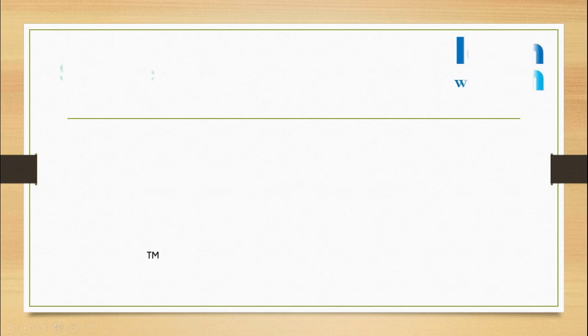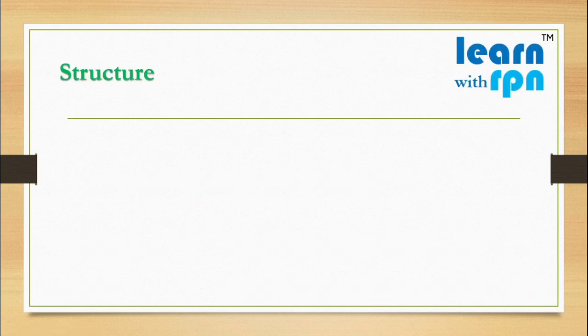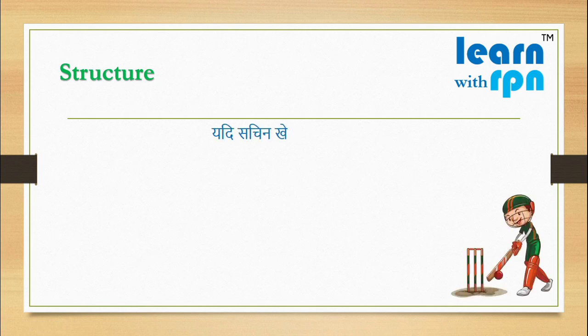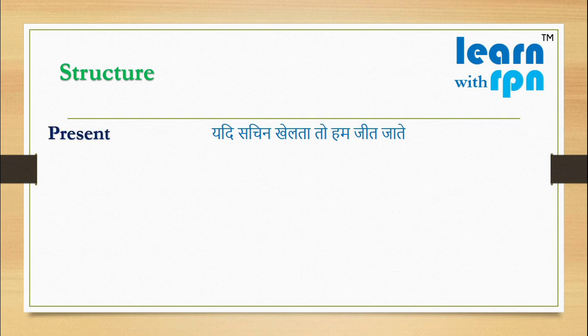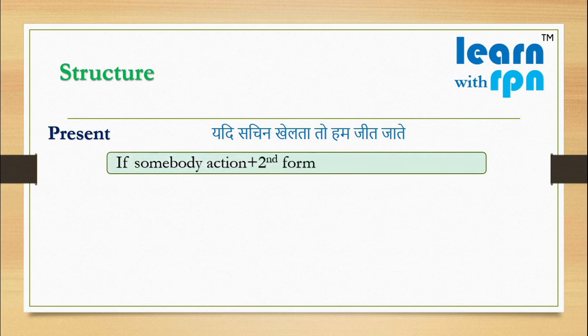Let's understand the next structure. दोस्तों, आज मैच हारने का बहुत दुख हुआ. यदि सचिन खेलता, तो हम जीत जाते. It is related to present. As I am saying now, here is a structure for this: If somebody action (second form), somebody would action. According to structure, we can say: If Sachin played, we would win.